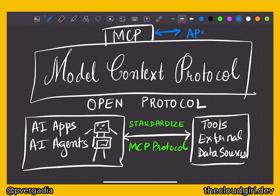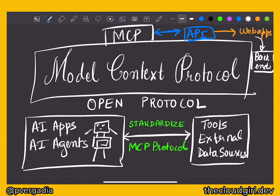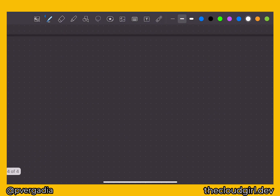Where did it come from? You can think of MCP as very much like APIs for web apps. APIs really help standardize how web apps connect to our backends, our databases, and other systems. In the exact same way, MCP standardizes how AI apps and agents connect to data and tools.